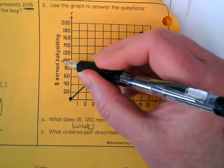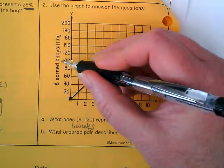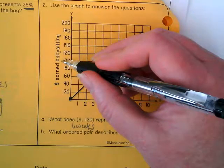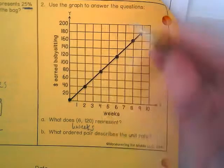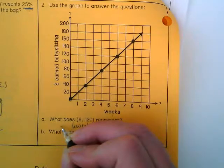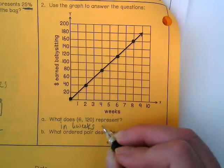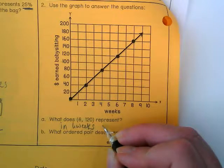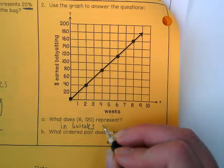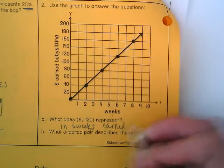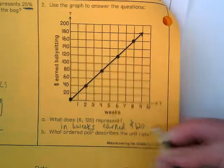And what does the 120 then represent? Okay, so earned babysitting. That means in 6 weeks' time, somebody earned what? So I can go back to my in 6 weeks. She earned, he earned, I earned. Do we know who this problem's about? Who are they?